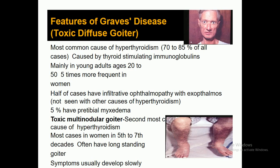These are the features of Graves' disease as shown in the image. The appearance shows features of Graves' disease — toxic diffuse goiter and toxic multinodular goiter. The most common cause of hyperthyroidism is Graves' disease, accounting for 70 to 85 percent of all cases, caused by thyroid-stimulating immunoglobulin antibodies, mainly in young adults aged 20 to 50, five times more frequent in women.